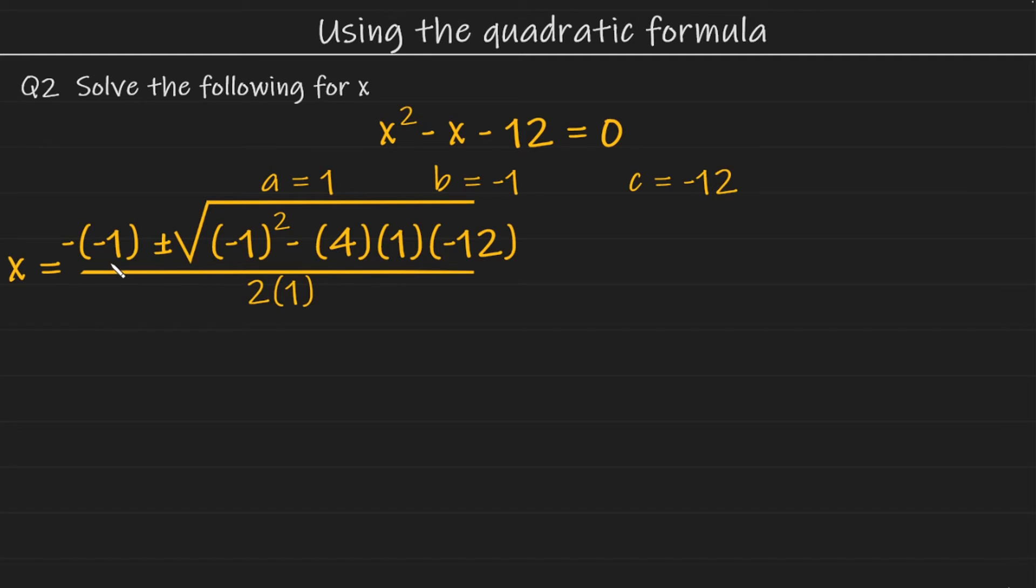Since your value for b is negative, putting it into the formula for the minus b part here turns it into a positive because we know that two negatives make a positive. So just be careful with that. And also for this part here, minus 1 to the power of 2.